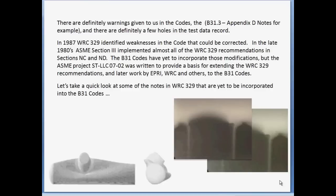We've discussed B31.3 Appendix D and we've looked at some test data. Let's go back now to looking at areas in the code where FEA tools can help us avoid making mistakes. There are definitely warnings given to us as designers in the code, and there are also a few holes in the test data record. We expect that an FEA tools type product can help us with those — for example, to avoid the D/T equals 100 limit and to address the D/D between 0.5 and 1 non-conservative issue.